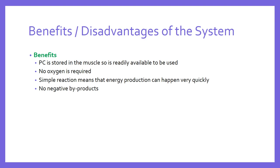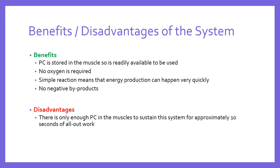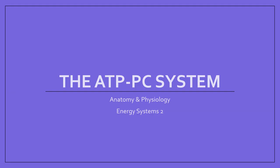The key disadvantage, however, is similar to the problem with ATP: there just isn't that much PC in the muscle. It can sustain the system for about ten seconds but not much more. So it's ideal for speed, sprinting, and power events like throwing, discus, and javelin, but anything lasting more than about ten seconds will cause this system to run out quite rapidly. That's it for the ATP PC system — thanks for watching.